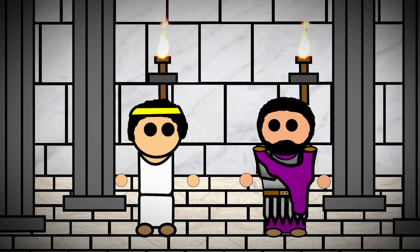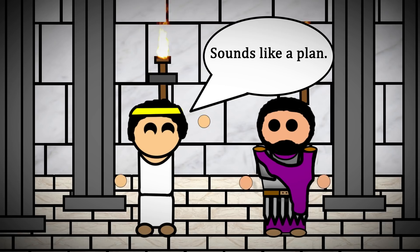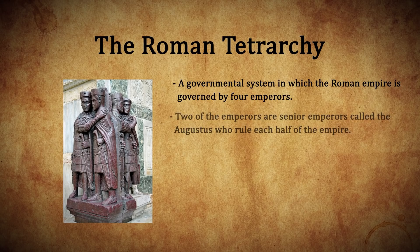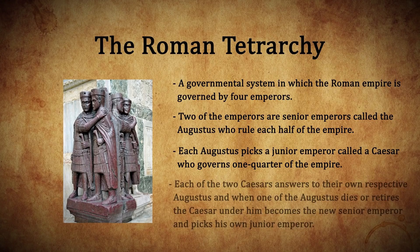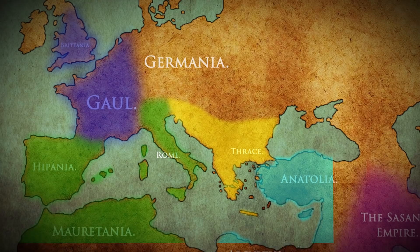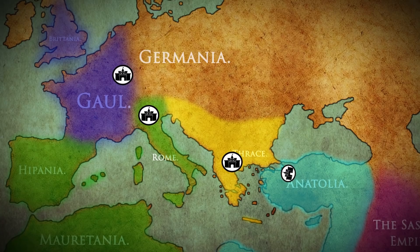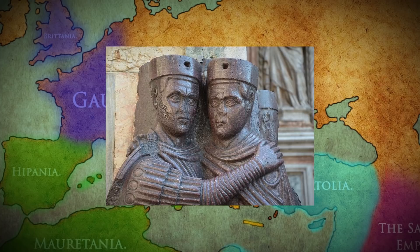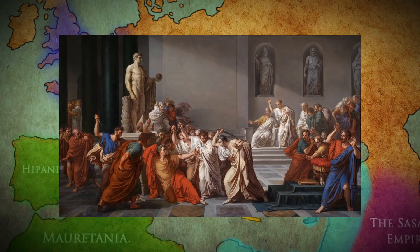In order to restore stability to the empire, Diocletian created a new political system called the Roman Tetrarchy. In this system the empire was ruled by four emperors — two senior emperors called the Augustus and two junior emperors called the Caesars. Each of the two Caesars was handpicked and answered to the respective Augustus, and when one of the Augustuses died, the Caesar under him would become the new Augustus and pick a new Caesar to serve under him. This new political system decentralized the political power of the empire by removing it from Rome to the cities of Trier, Milan, Thessalonique and Nicomedia, which started to function as the emperors' headquarters. This system also meant that political power no longer was centered in the hands of one person, which removed the risk of the empire descending into crisis if one of the emperors was assassinated. The Roman Tetrarchy initially worked well and restored stability to the empire, but that stability did not last for long.